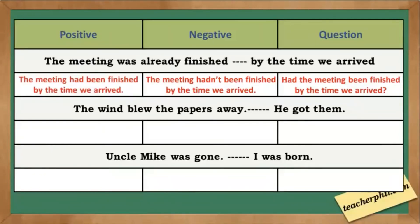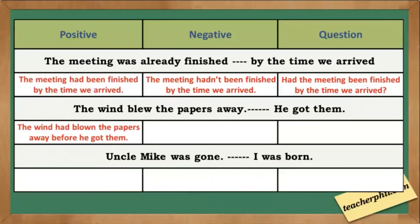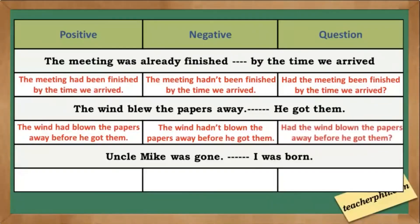Next: The wind blew the papers away and he got them. Positive statement: The wind had blown the papers away before he got them. Negative sentence: The wind hadn't blown the papers away before he caught them. Question: Had the wind blown the papers away before he caught them?